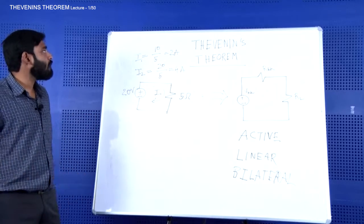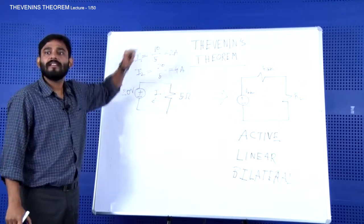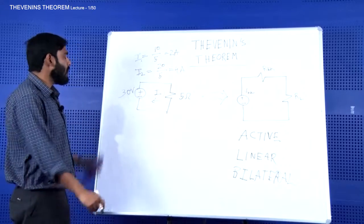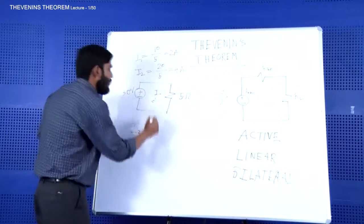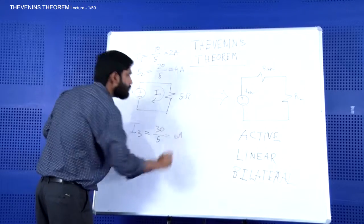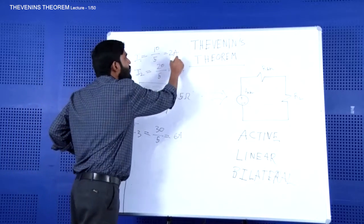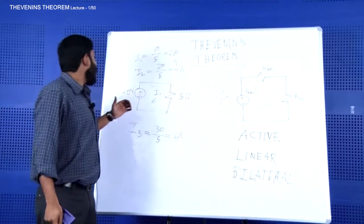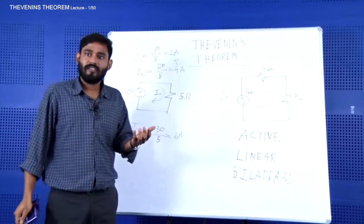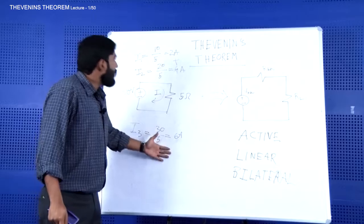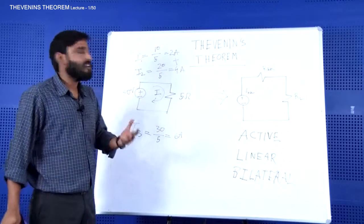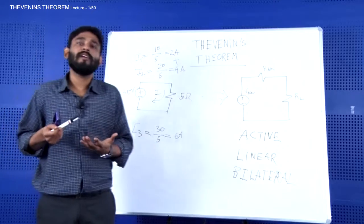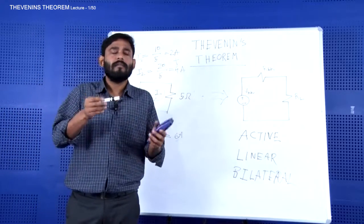Now if I apply 30 volts — that is 20 plus 10 — the total current I3 = 30/5 = 6 amperes, which is exactly the summation of the first current and the second current. Whenever I apply a voltage source to a resistance, the final current is the summation of each individual application. That property is called linearity.